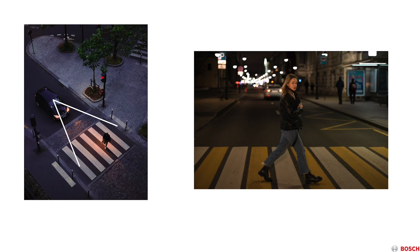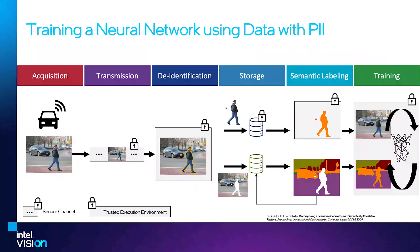Our goal is to use video like this to train a neural network. There are six stages to this neural network training pipeline: acquisition, transmission, de-identification, storage, semantic labeling, and finally training.